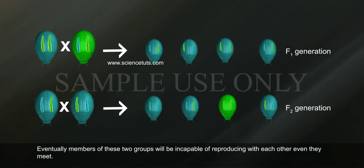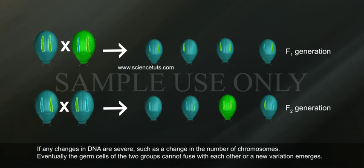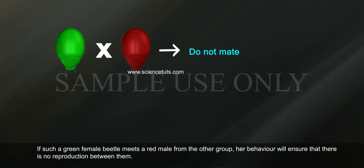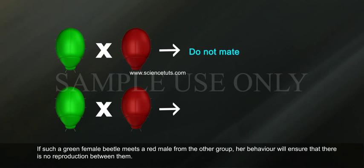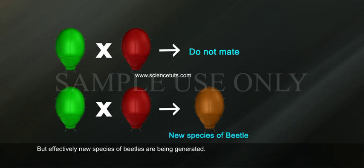Eventually, members of these two groups will be incapable of reproducing with each other even if they meet. If any changes in DNA are severe, such as a change in the number of chromosomes, the germ cells of the two groups cannot fuse with each other, or a new variation emerges. For example, if green females will not mate with red males but only with green males, this allows very strong natural selection for greenness. If such a green female beetle meets a red male from the other group, her behavior will ensure there is no reproduction between them. Effectively, new species of beetles are being generated.